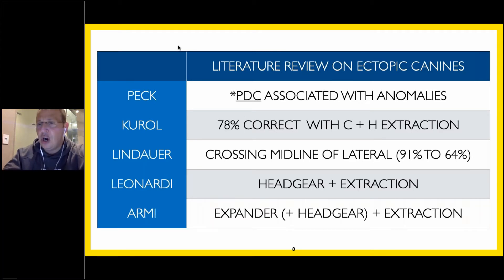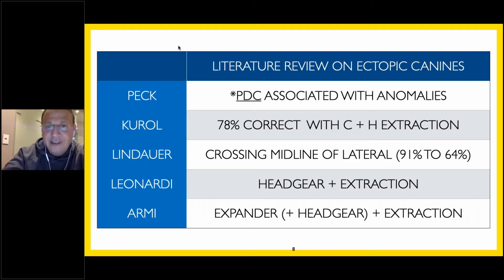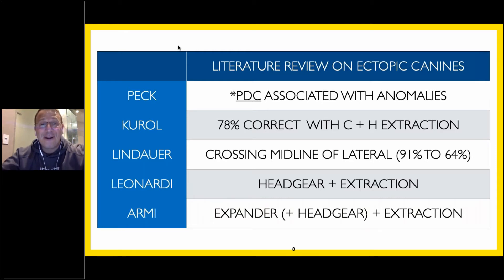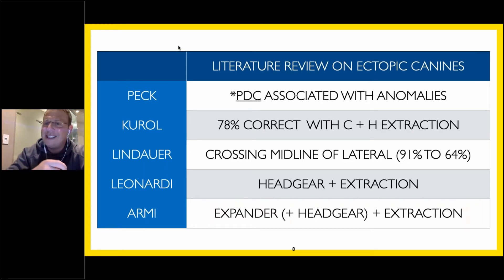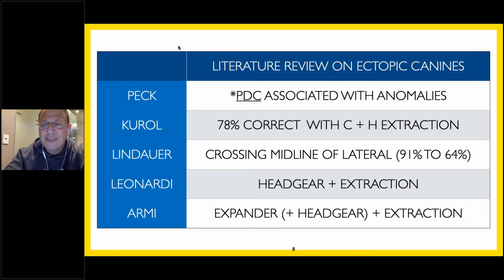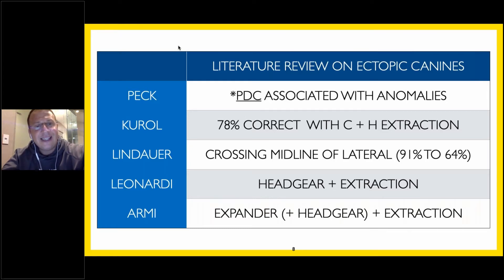Palatally displaced canines are associated with genetic anomalies. If you have a peg lateral, think palatally displaced canine. If you have a palatally displaced canine, think a missing mandibular second premolar or a mesioangular mandibular second molar. Remember, labially displaced canines are usually associated with crowding. Uri Kural said that if we can extract C and H before that canine crosses over the distal aspect of that lateral incisor — if we can extract C and H early — 78 percent of the time that ectopic canine will auto-correct.